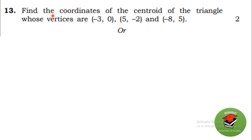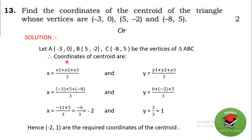Find the coordinates of the centroid. The vertices are A(x1, y1), B(x2, y2), C(x3, y3) where x1 = −3, x2 = 5, x3 = −8 and y1 = 0, y2 = −2, y3 = 5. Putting values in the centroid formula: x = (−3 + 5 − 8)/3 = −6/3 = −2, and y = (0 − 2 + 5)/3 = 3/3 = 1. Hence the required coordinates of the centroid are (−2, 1).